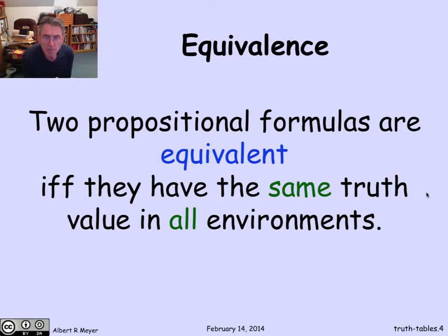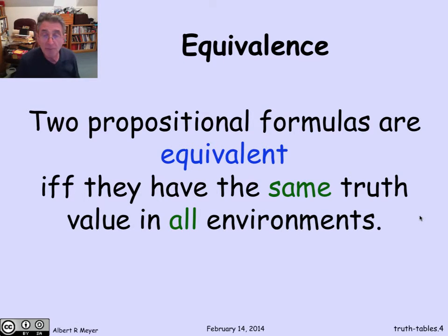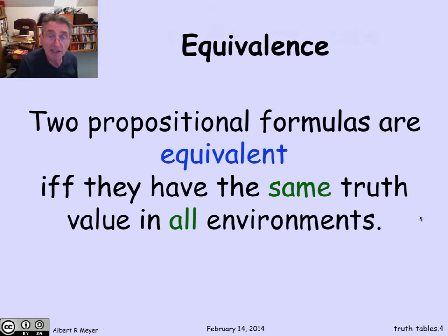A basic idea about propositional formulas: two of them are equivalent if and only if they have the same truth values in all environments. No matter what the values of the p's, q's, and r's are, these two formulas come out to the same truth value. That's what makes them equivalent.